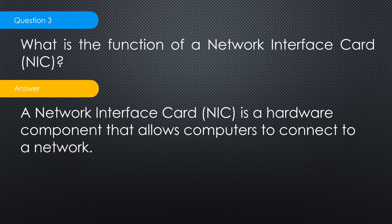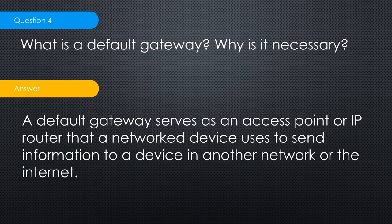Fourth question: what is a default gateway and why is it necessary? If a switch knows the MAC address, it forwards the traffic directly. If not, it sends it to the router — that is your default gateway. The default gateway serves as an access point or IP router that a network device uses to send information to a device in another network or the internet.